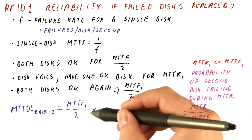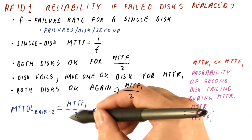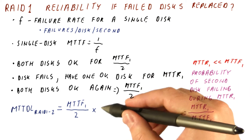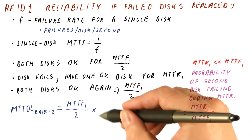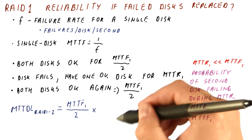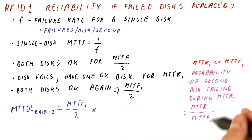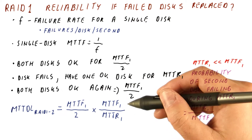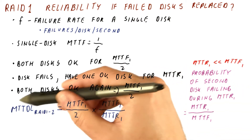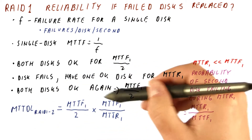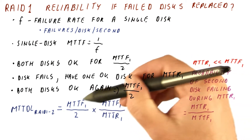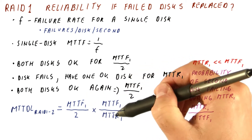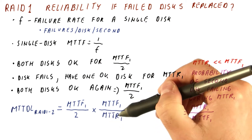So now, how many times can we repair the disk before we encounter one of these failures? The number of times we can try until we encounter a failure is one over this probability. What we finally get is this: the mean time to data loss is MTTF of a single disk squared, divided by two times the mean time to repair for one disk.